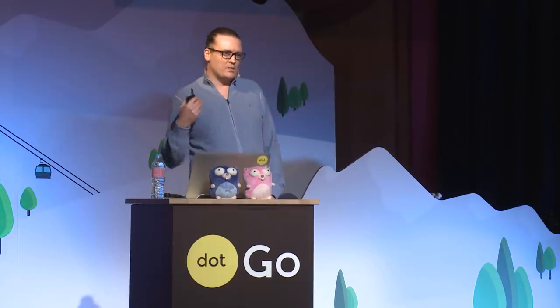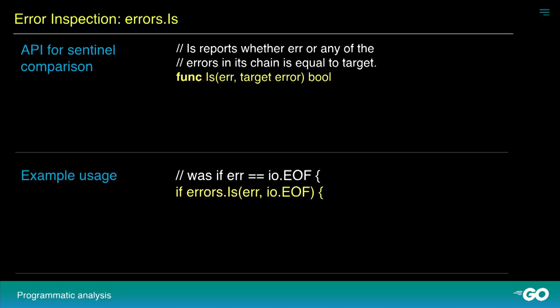A very obvious use case for this is path error. With path error, we can now expose the underlying error by providing this unwrap method, and that allows anybody to find this underlying error without actually having to know what a path error is. Typically, users will not call the unwrap method directly — you would use a helper function for this.